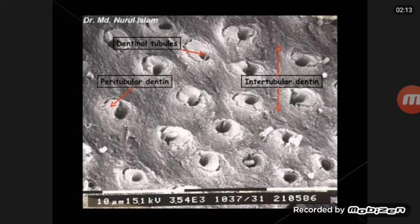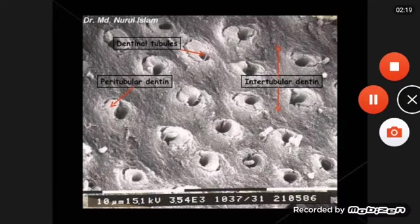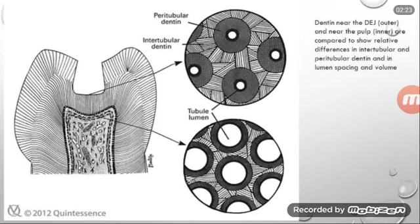Now we'll discuss about peritubular dentine. The dentine that immediately surrounds the dentinal tubule is called peritubular dentine. It is more highly mineralized than intertubular dentine.